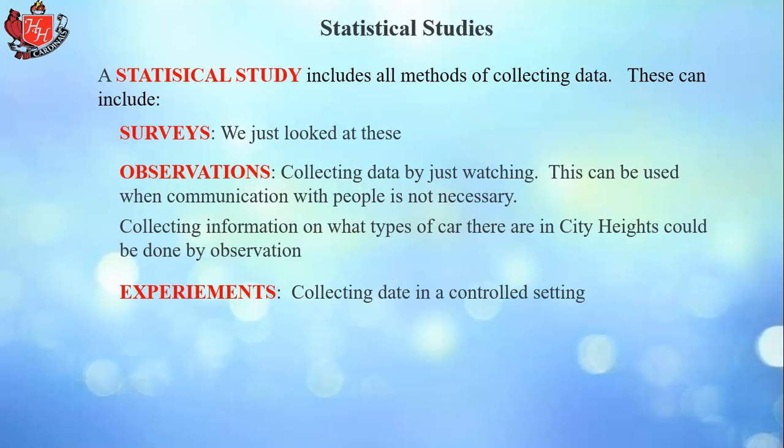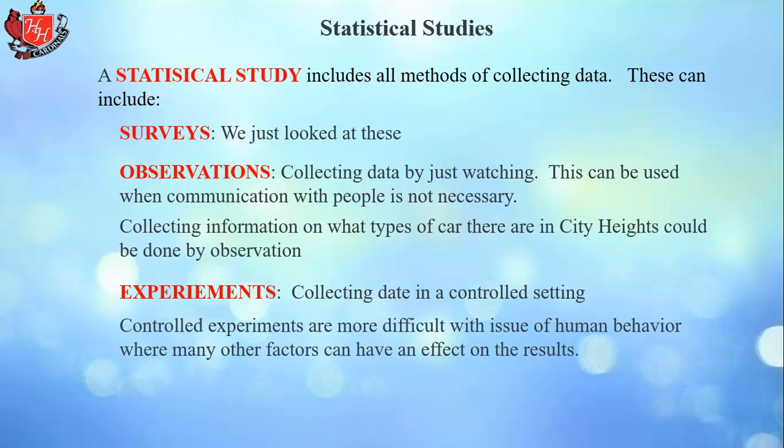Experiments involve collecting data in controlled settings. Controlled experiments are more difficult with human behavior, where many other factors can affect results. Experiments are better suited to physical sciences, where you can control temperature, quantities of materials, and other variables. With social sciences, where you're dealing with people, it's more difficult because a lot of unexpected things can enter into it.